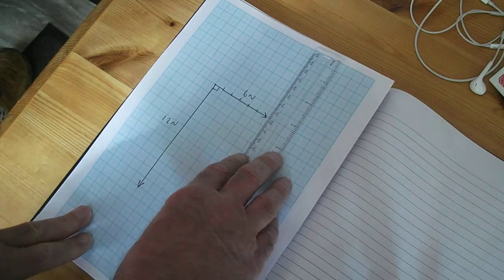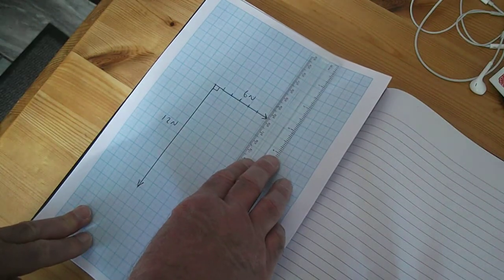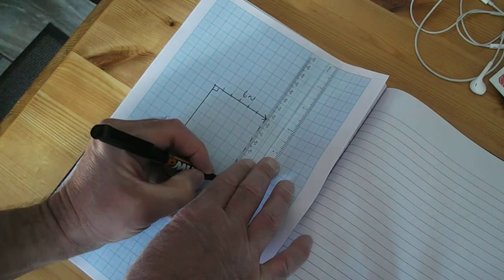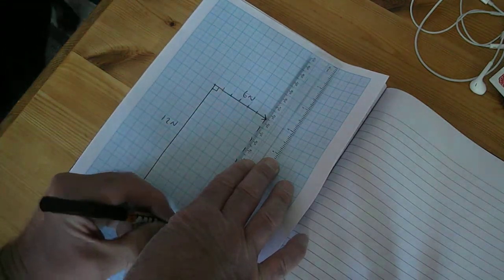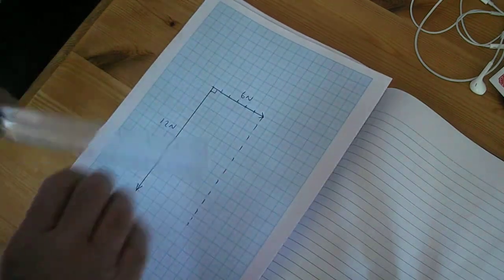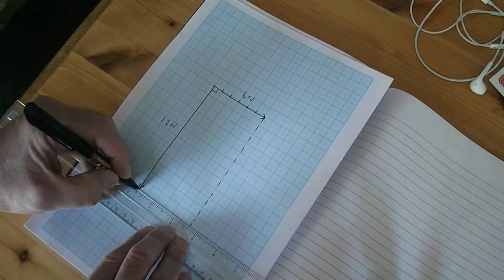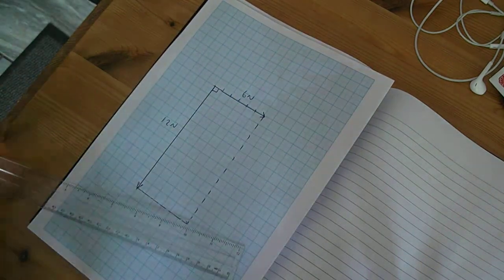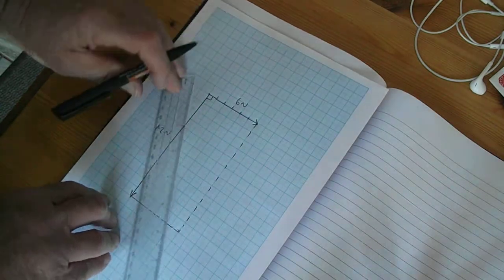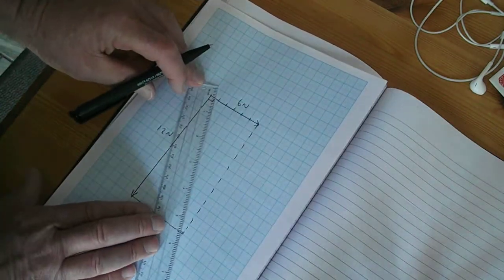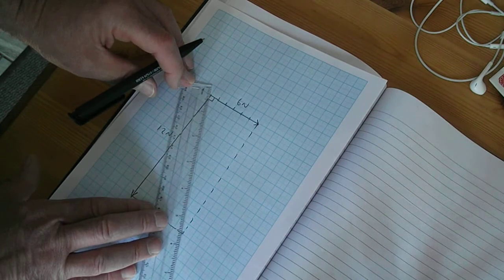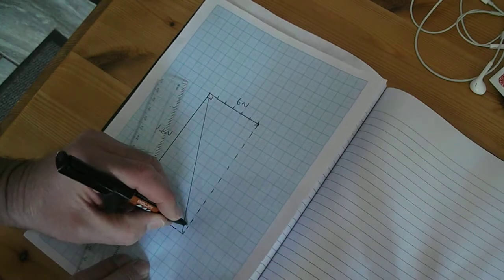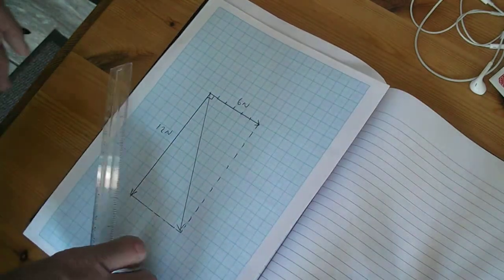I can work out if I draw what we call a parallelogram opposite those two forces - I'll just put a couple of dotted lines in there. If I now measure the diagonal length, if I draw the diagonal in here, this is what we call the resultant force.